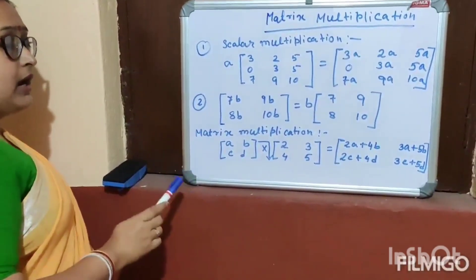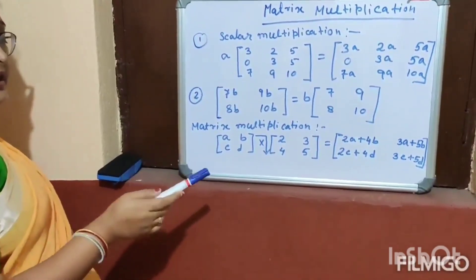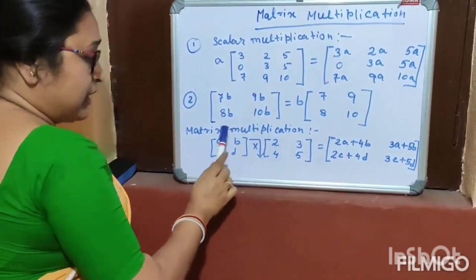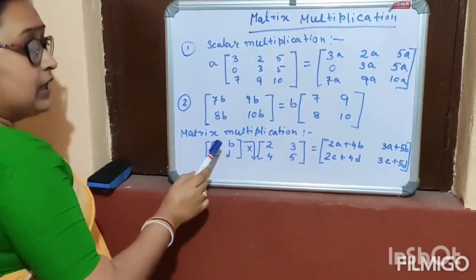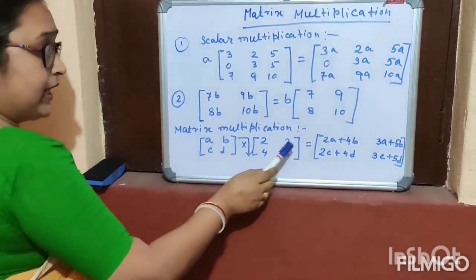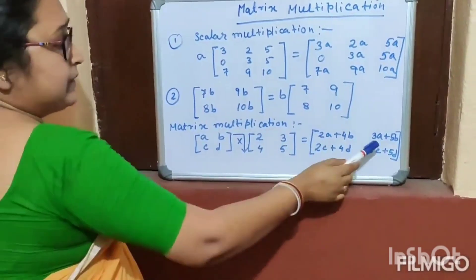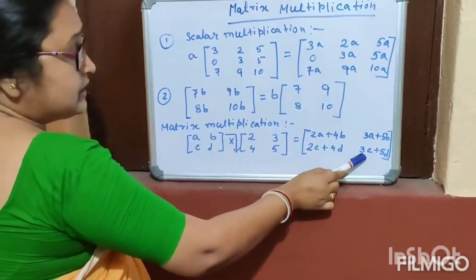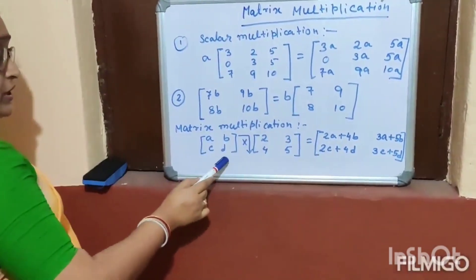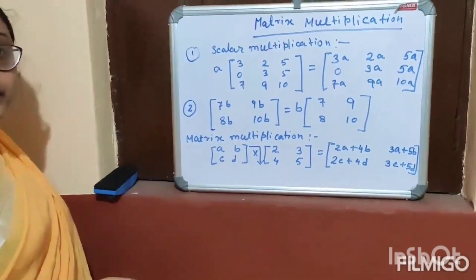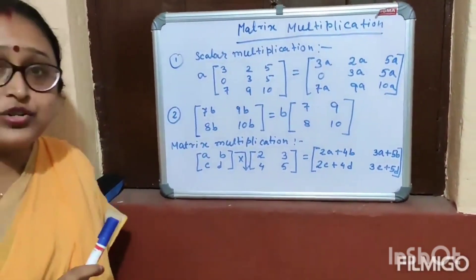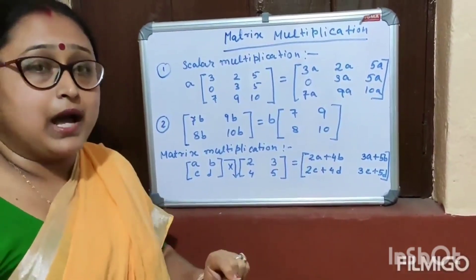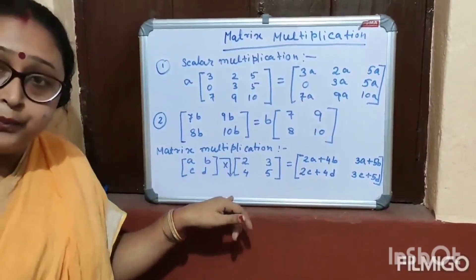So what is matrix multiplication? Matrix multiplication means you multiply two matrices row to column. First element is 2A plus 4B, second element is 3A plus 5B, third element is 2C plus 4D, and last element is 3C plus 5D. The multiplication of matrix means you multiply row to column.